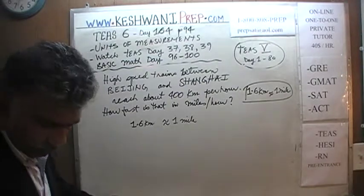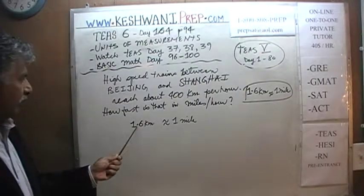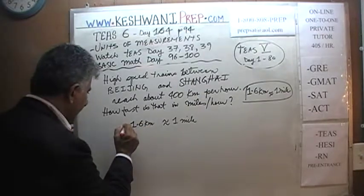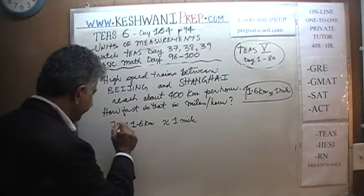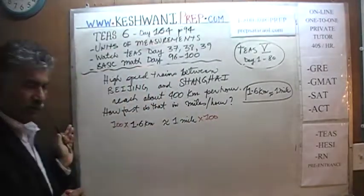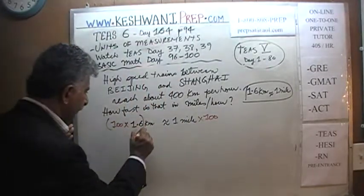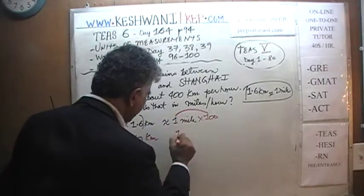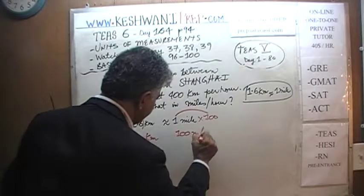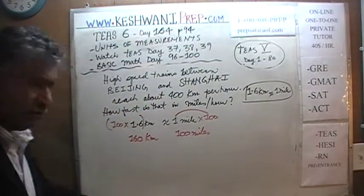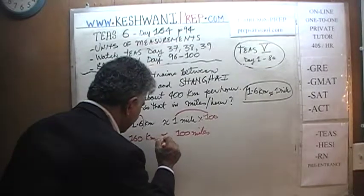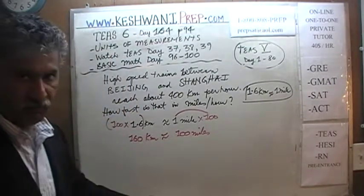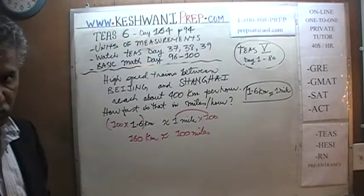Since we have to go all the way from 1.6 kilometers to 400 kilometers — that's a long ways away — let's multiply both sides of this equation by 100. 100 times 1.6 is going to be 160 kilometers, and 1 times 100 is just 100 miles. So what we established here is that 160 kilometers is approximately 100 miles, or if you like, 100 miles is approximately 160 kilometers.